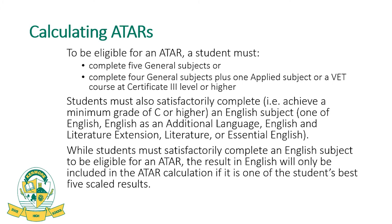With regard to calculating ATARs, a student must first be eligible in Queensland to receive an ATAR, and that means they must do a combination of subjects. Bottom line, they must include at least four general subjects. They can complete five or six general subjects. If they are only completing four general subjects, one of the others must be an applied subject, such as Essential English or Social and Community Studies, or a vocational course at Certificate III level or higher.